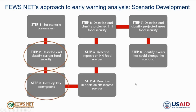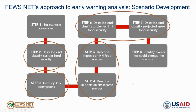Following our current situation analysis, we develop evidence-based assumptions about the likely evolution of key drivers of acute food insecurity throughout our projection period. We translate these expectations into impacts on households' access to food and income, then synthesize these expectations into an understanding of whether households' access to food and income is likely to meet their needs, and classify most likely food security outcomes during the projection period according to the scale of any gaps they may face.